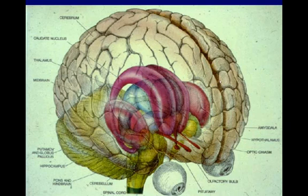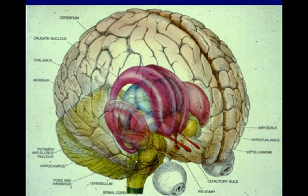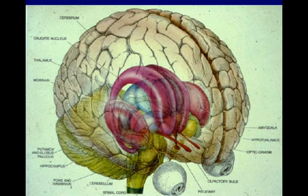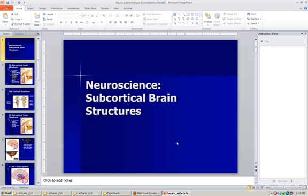To give you an idea of how these all fit together — if we could see through somebody's brain, this is what it would look like. We have the hippocampus wrapping around here, the thalamus here, and the amygdala down here. Of course, all of this is cortex as well. That is your brief introduction to subcortical structures.